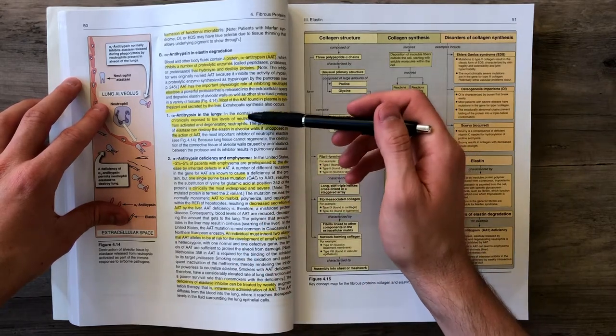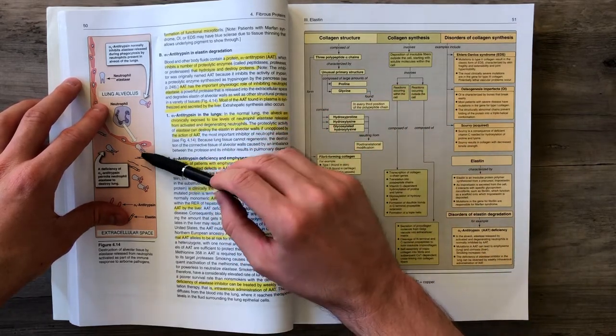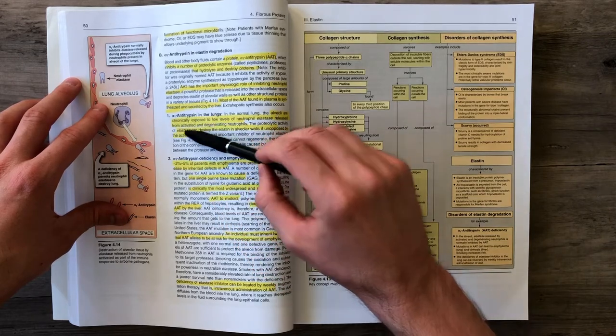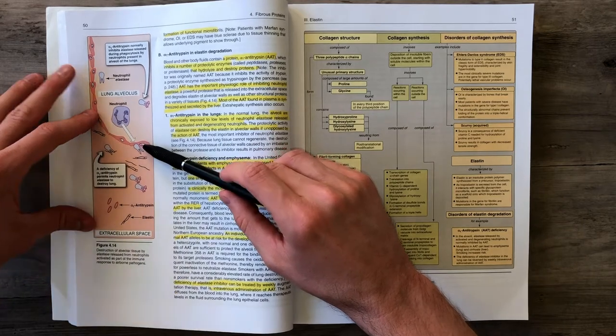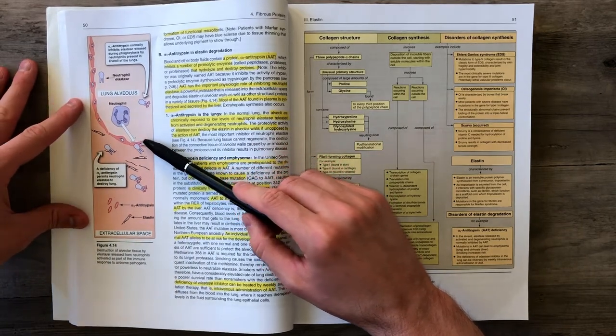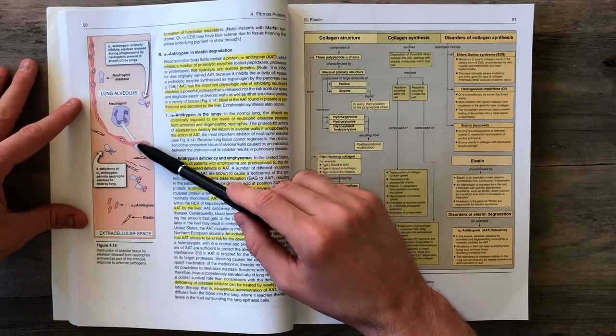Those neutrophils release elastase, which would normally break down elastic tissue within our lungs. However, we have alpha-1 antitrypsin from our liver, which helps inhibit elastase. So our elastic tissue is saved.